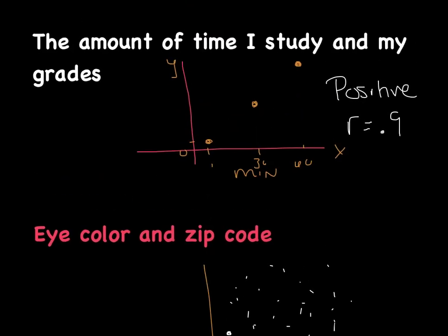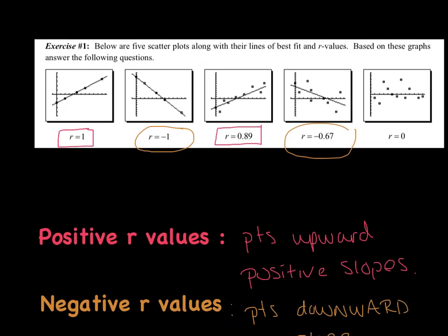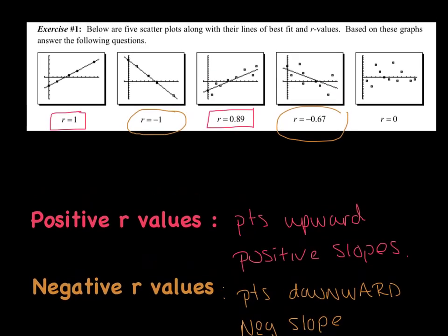Let me scroll back up. There's one other important thing I need to stress. Notice, the only time my points land directly on the line is if I have a perfect correlation. Okay, 0.89 is pretty darn close to one, but that means the points are a little off the line. The only time they're going to land directly on that line is if I was equal to one or negative one. And remember, the positive versus negative just tells me the direction or the slope of that line.